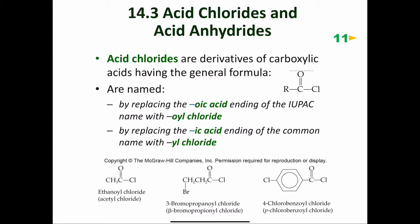Let's get started talking about acid chlorides and acid anhydrides. We'll start with acid chlorides. Acid chlorides are derivatives of carboxylic acids and they have this general formula. If you take a carboxylic acid and simply replace the hydroxyl with a chlorine, you get what's called an acid chloride.